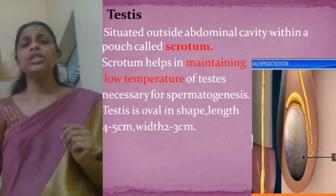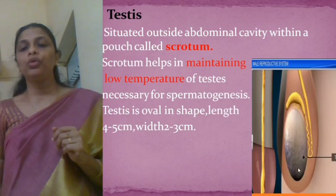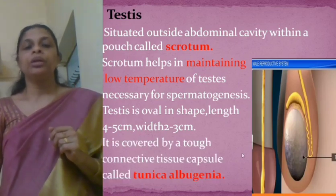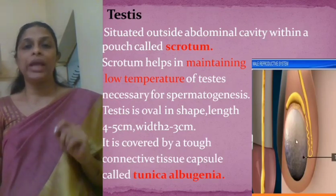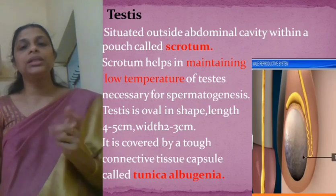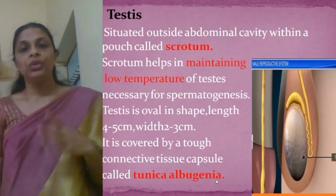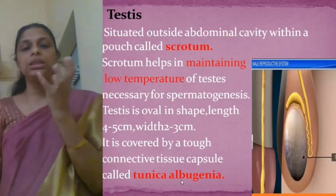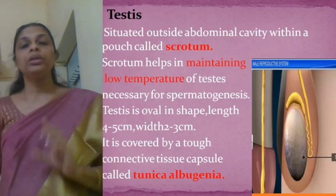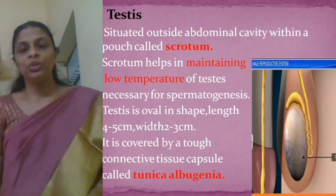The testes are oval in shape with a length of about 4 to 5 centimeters and a width of about 2 to 3 centimeters. The testes is covered by a tough connective tissue capsule called the tunica albuginea, which is the outer lining of the testes.